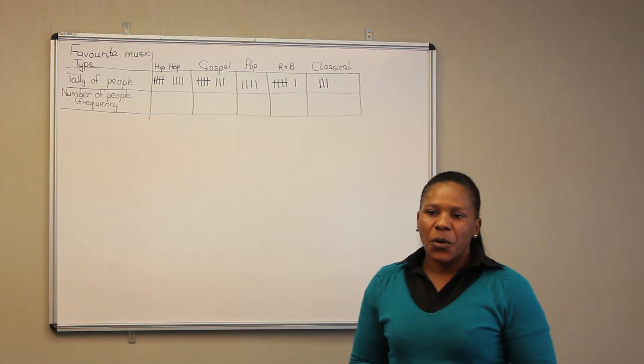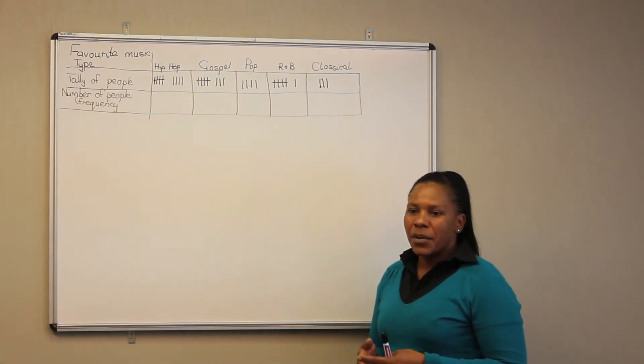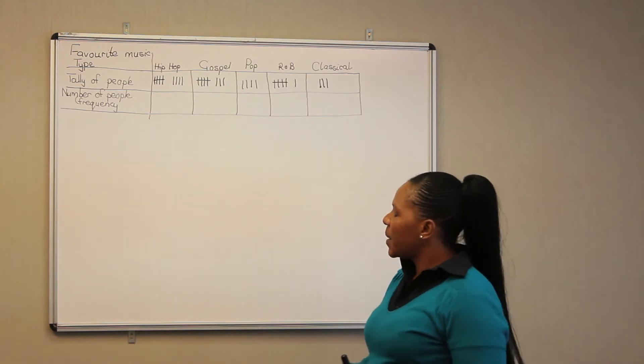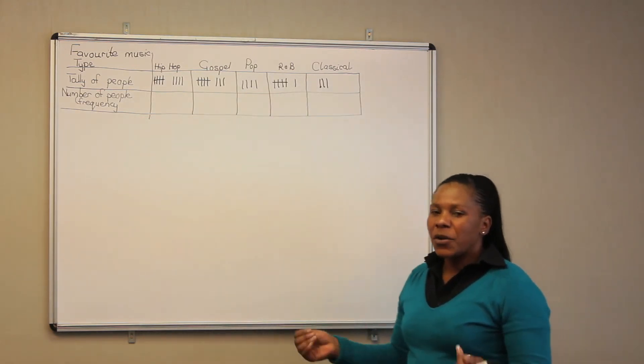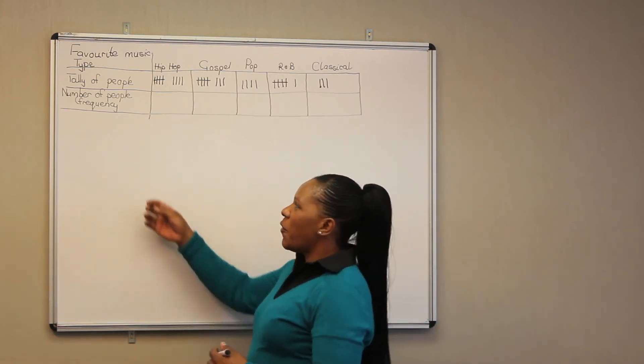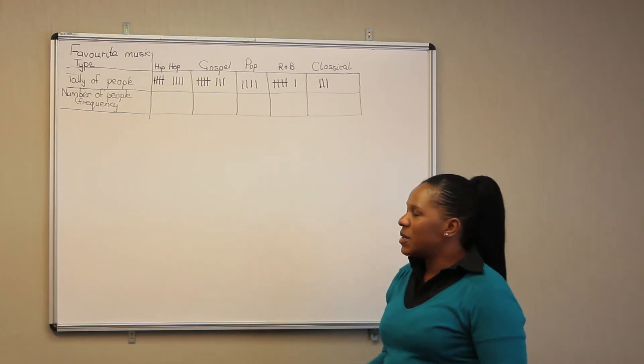In this instance, we pretend as if we have asked 30 people about their favourite type of music. And these are the responses that we got. So we are going to draw a table, first of all, with tallies of people who love certain type of music.